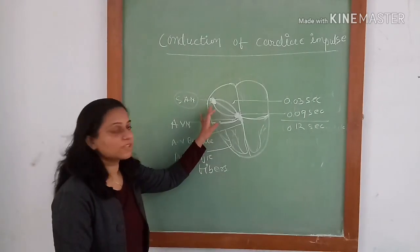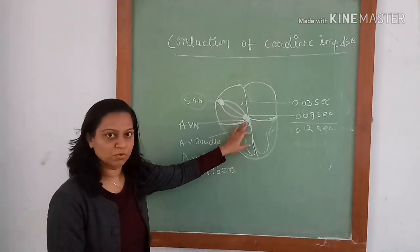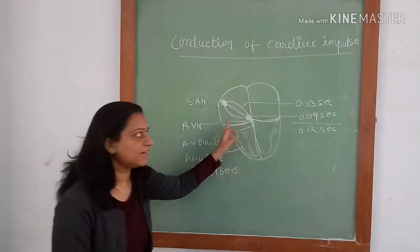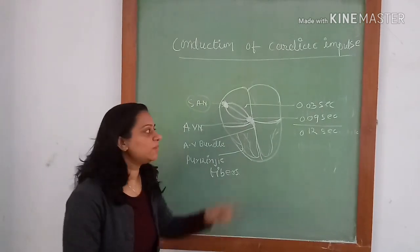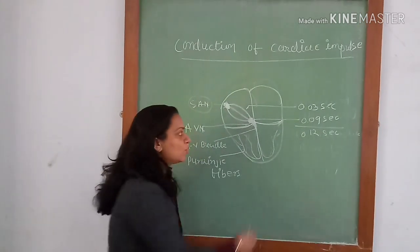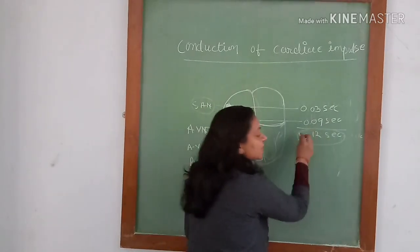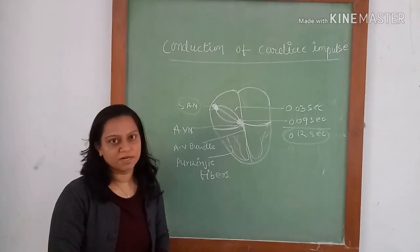Time taken for the impulse to reach from the SA node to the AV node through this internodal tract is 0.03 second. In AV node itself there will be delay of 0.09 second. So total delay of 0.12 second occurs before the impulse reaches the AV bundle.